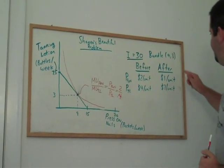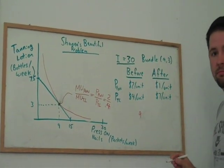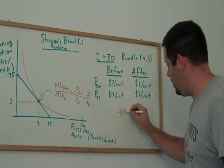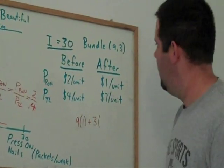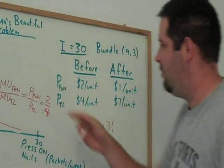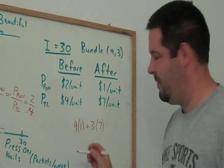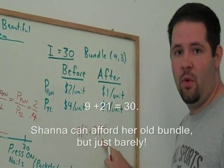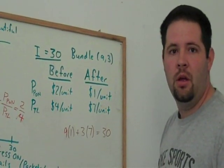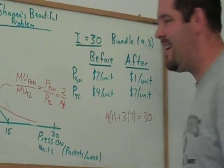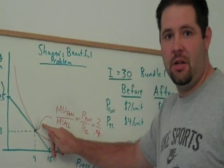The old bundle had 9 units of press-on nails. Those now cost $1. It had 3 units of tanning lotion, 3 bottles of tanning lotion. Those now cost more, cost $7. 9 plus 21, that's 30, exactly her income. And so we know that that's exactly on our budget constraint. We know that this is a point on the budget constraint.